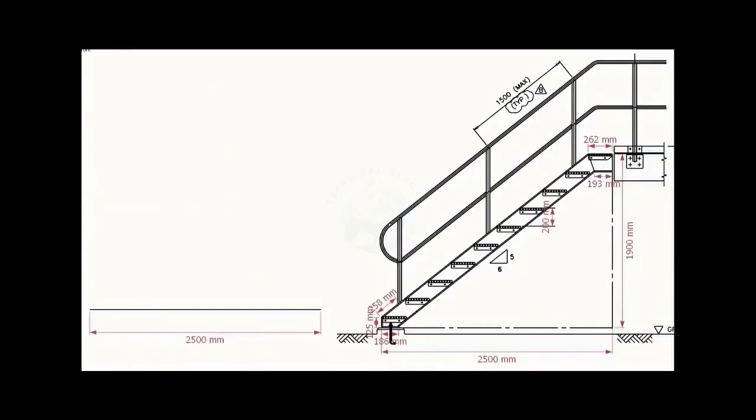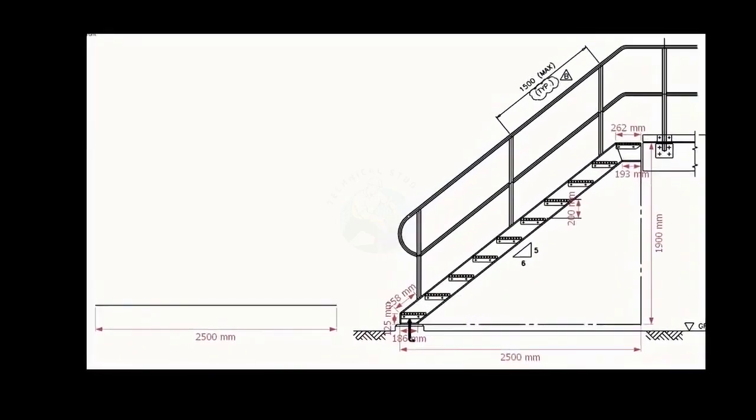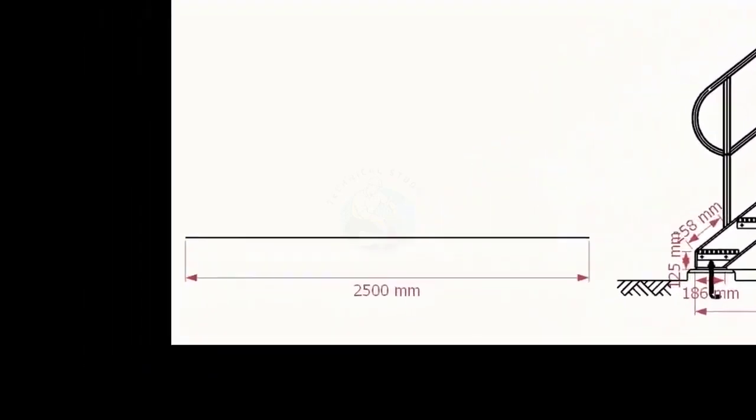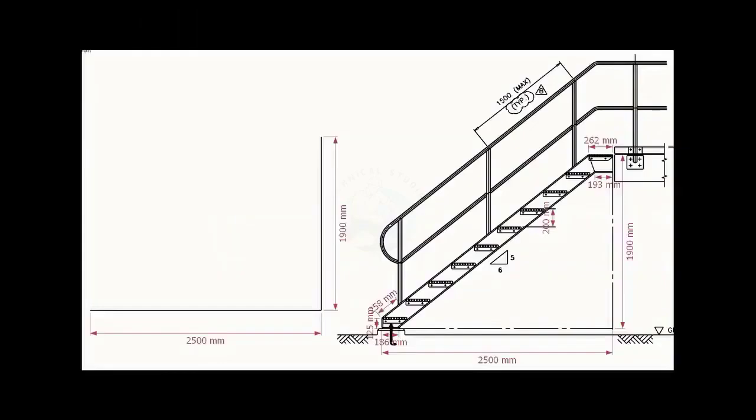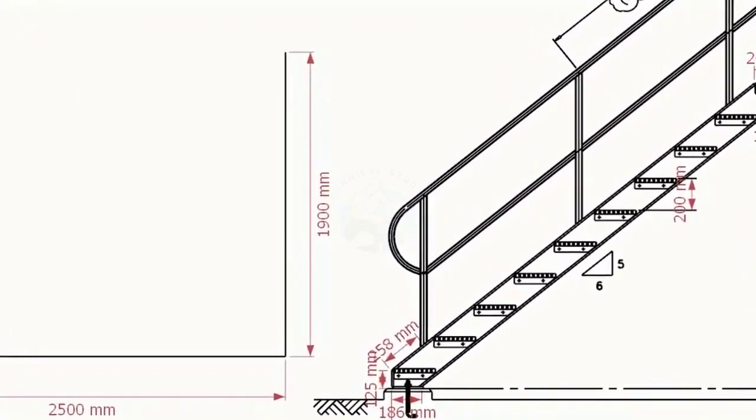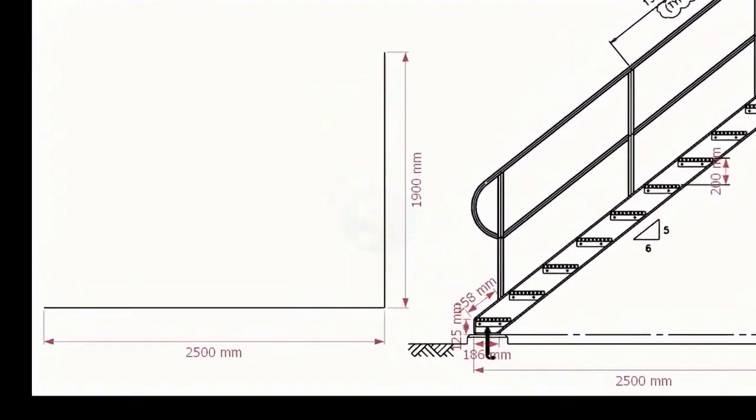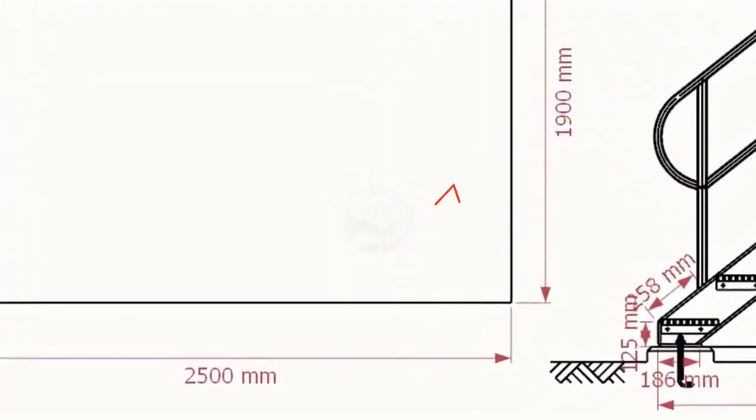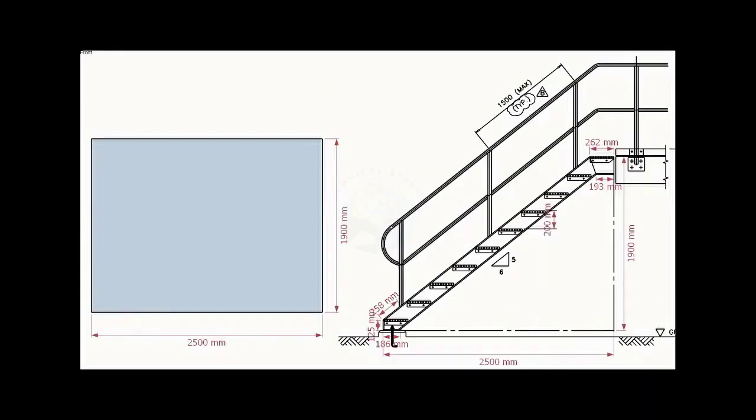Let us start a layout on a leveled plate or a platform. Draw the bottom length 2500 millimeters. Draw the width 1900 millimeters. Make sure the included angle is 90 degrees. Let us complete the rectangle.